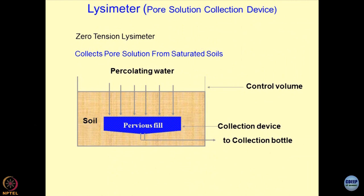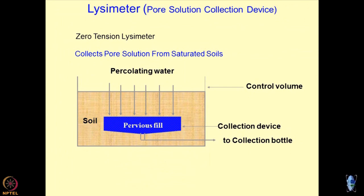If the water used for artificial rainfall is contaminated with some chemical species, you can observe what type of percolation is taking place and what type of percolants are getting deposited in the pervious wells. This tells you the sorption capacity of the soil under in-situ conditions and the attenuation properties of the geomaterials. Hence, lysimeters can be used for characterizing the soil mass.